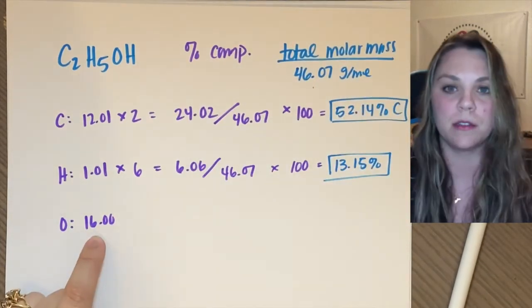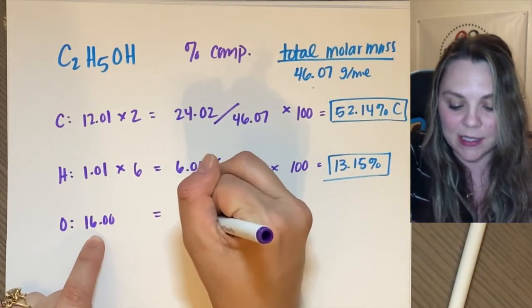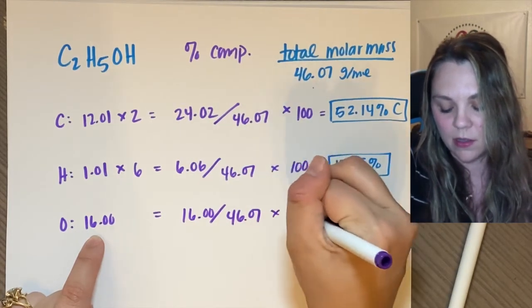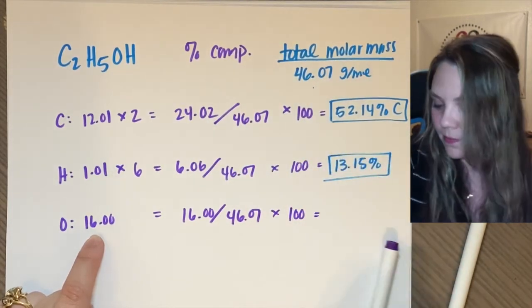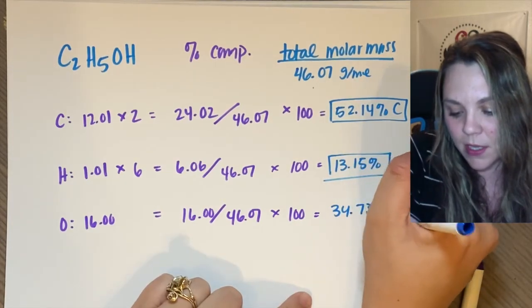For oxygen, there's only one of them. So 16 times 1 is 16 divided by 46.07 times 100 is 34.73 percent.